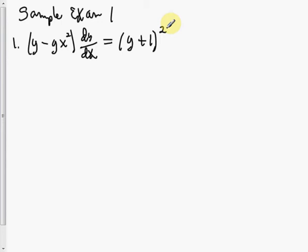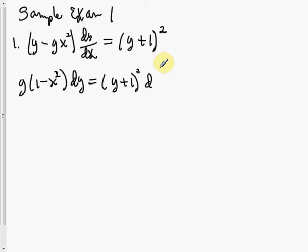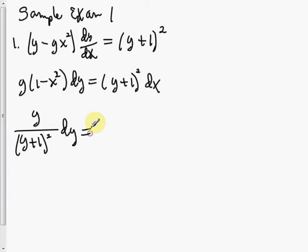First, I'm going to factor out a y and then multiply everything by dx. Separating the variables, we get the y's and dy's together, the x's and dx's together. We divide both sides by 1 minus x squared and divide both sides by y plus 1 squared. That leaves us on the left side with y over (y plus 1) squared dy, equal to 1 over (1 minus x squared) dx.